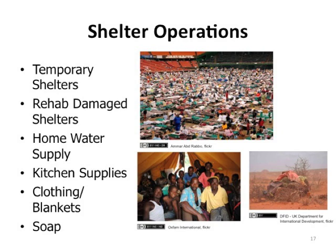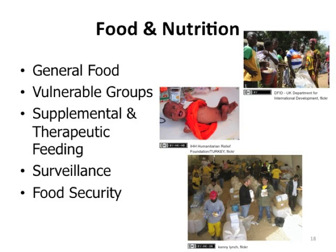Food and nutrition operations include general food availability and food security, with particular attention to vulnerable groups — especially those vulnerable to severe malnutrition — supplemental and therapeutic feeding for special at-risk groups, surveillance, and food security.